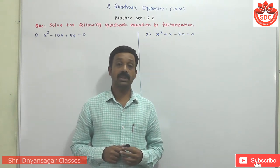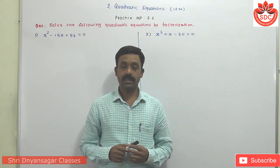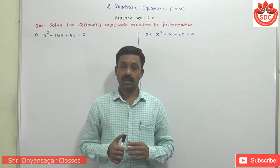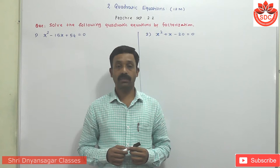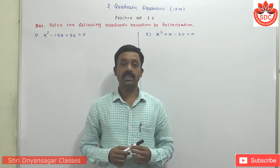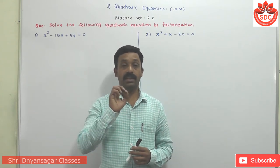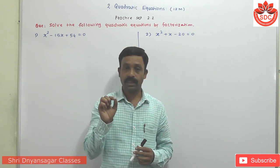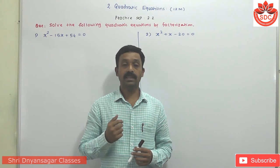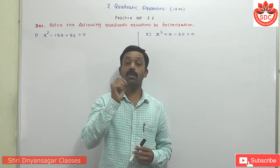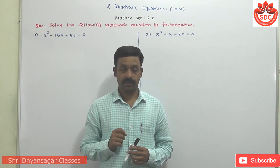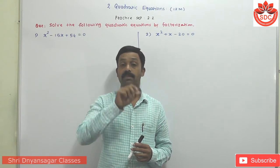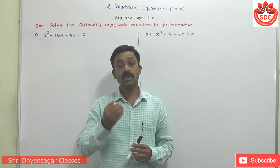In this, we have to find out the solutions of the quadratic equation. There are some methods. First one is the factorization method. Second one is the completing square method. And third one is the formula method. In the factorization method, we have to write the given equation in standard form — AX² + BX + C = 0. Then find out the product of A and C. Third step is factorize AC such that their addition gives the middle term.